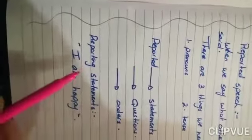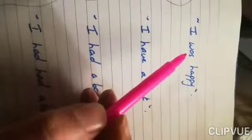Now let's have a look at reporting statements. When I say 'I am happy,' then 'she said that' — 'that' is optional. Remember, I change the pronouns and I change the tense — you go one step backward — so it becomes 'she was happy.' For the second sentence, 'I was happy, he said,' — 'that' is optional. When we report 'was,' it becomes 'had been.' So: 'he had been happy.'